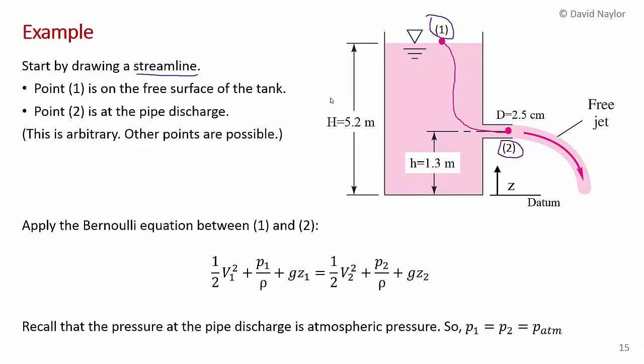Now point one and two are somewhat arbitrary. You can use other points. We'll talk about this in future examples. So other points are possible, but as you'll see, this is a pretty smart choice that makes the analysis easy.